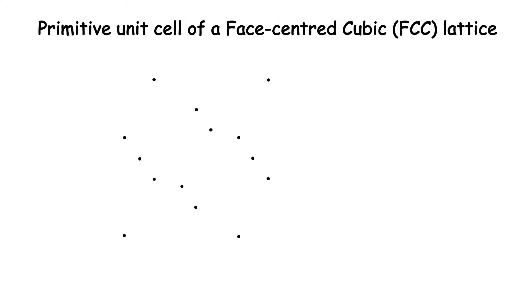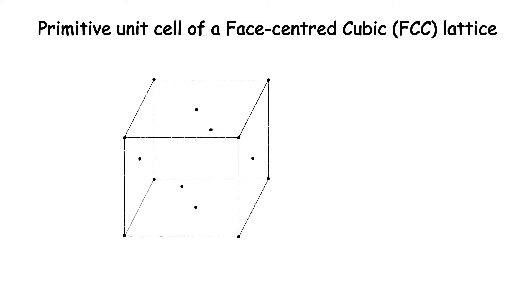A given lattice can be generated by infinitely many different unit cells. The conventional unit cell used for the FCC lattice shown here is a non-primitive one because it has lattice points other than those at the corners — the face-centering ones. In a primitive unit cell, lattice points will be there only at the corners. For some purposes, for example to determine the reciprocal lattice, it is useful to describe the lattice with a primitive unit cell.